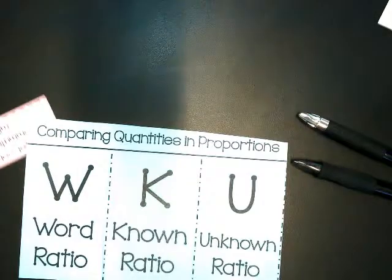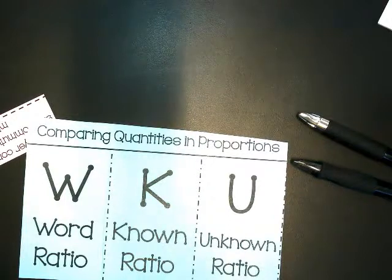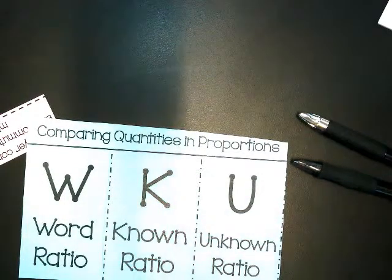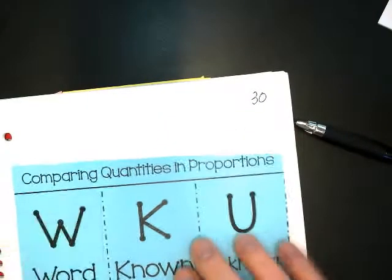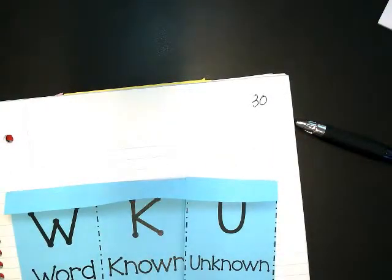And now we're ready for the gluing. So you're going to open your notebook to page 30. And we're going to glue this in by simply folding this over on the solid line and putting some dots of glue on the back of that.